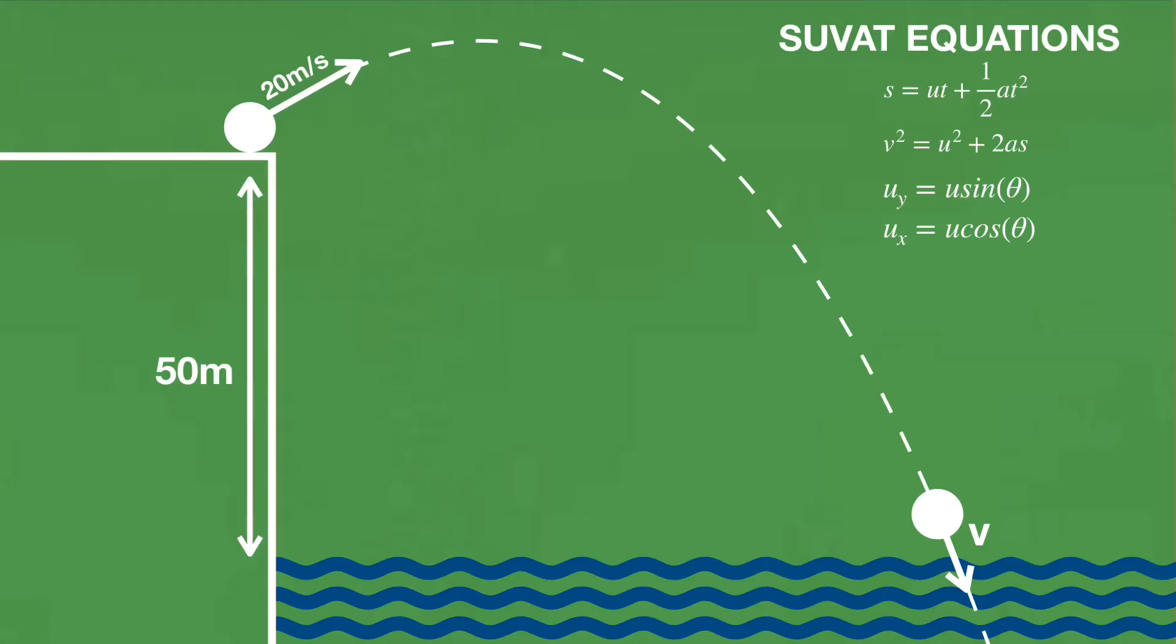Your first instinct might be to find the x and y components of velocity, but this is totally unnecessary. Instead, consider the total energy of the system initially and before impact.